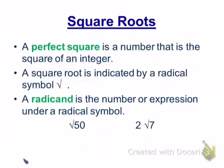The radicand is the number or expression under a radical symbol. In this first expression here, this is the square root of 50. The 50 is the radicand and the index there would be two. How would you read this expression? Two times the square root of seven. That's exactly right. It's two times the square root of seven, or you could read it as two square roots of seven.